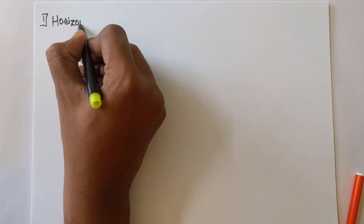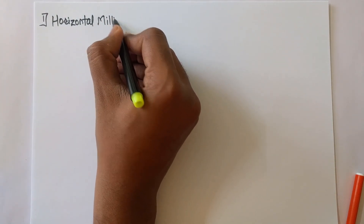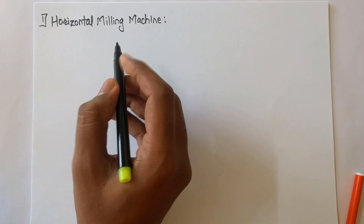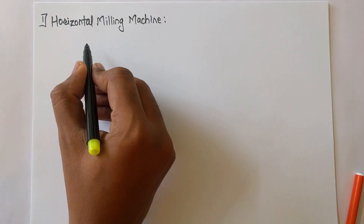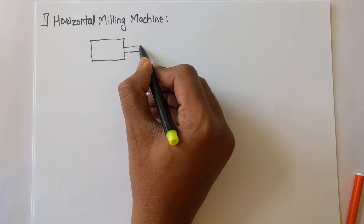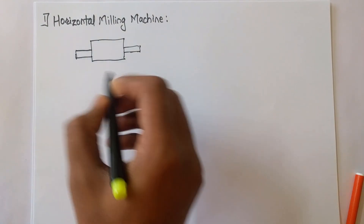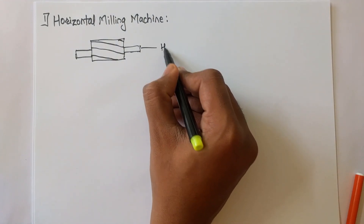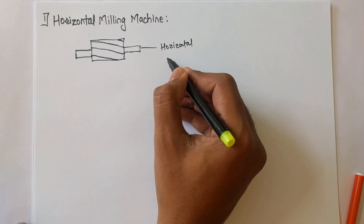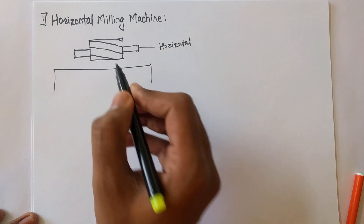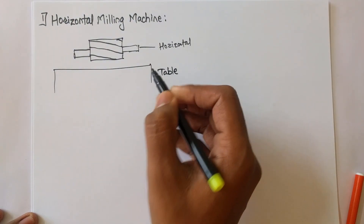The first type is the horizontal milling machine. In the horizontal milling machine, when the axis of the milling cutter is horizontal, it is called a horizontal milling machine. Consider this milling cutter — its axis is horizontal to the table. The table is also horizontal and there is a workpiece on the table.